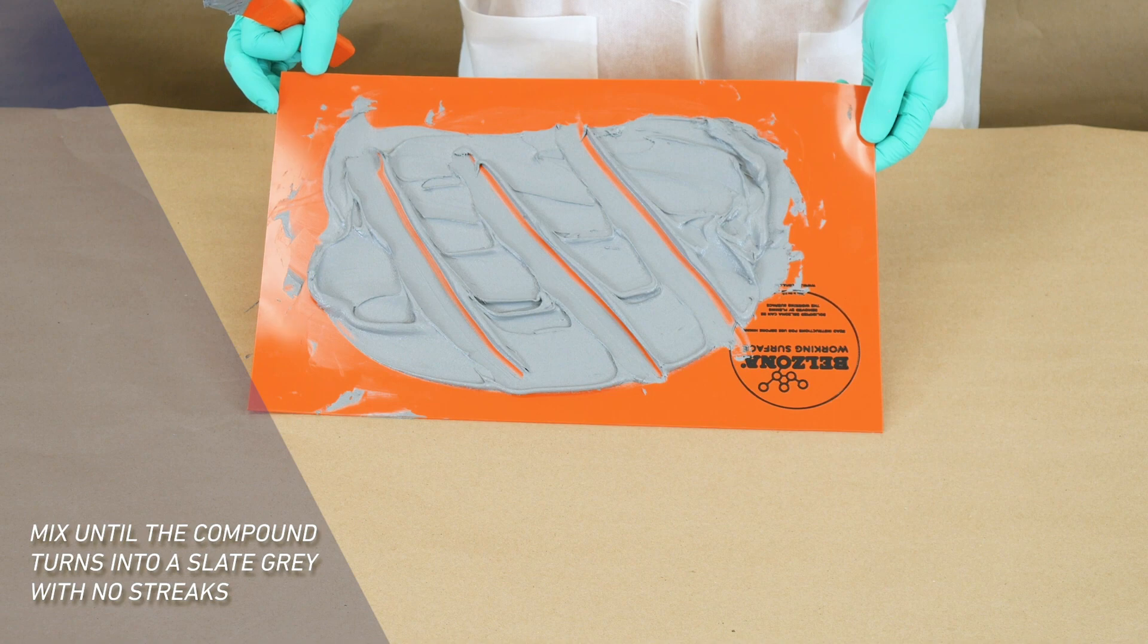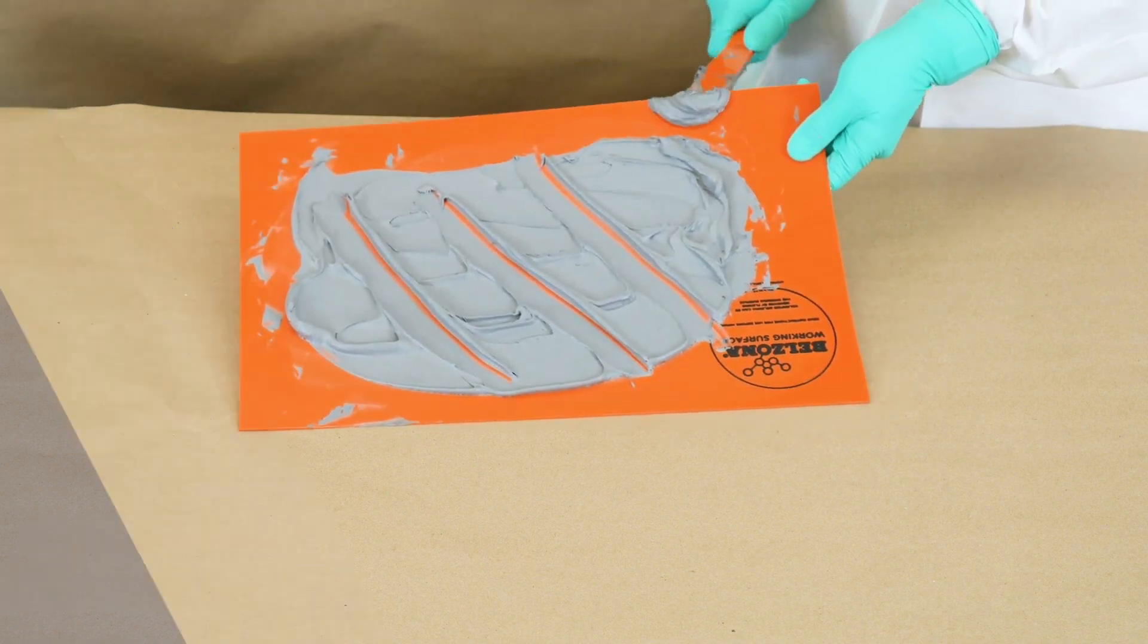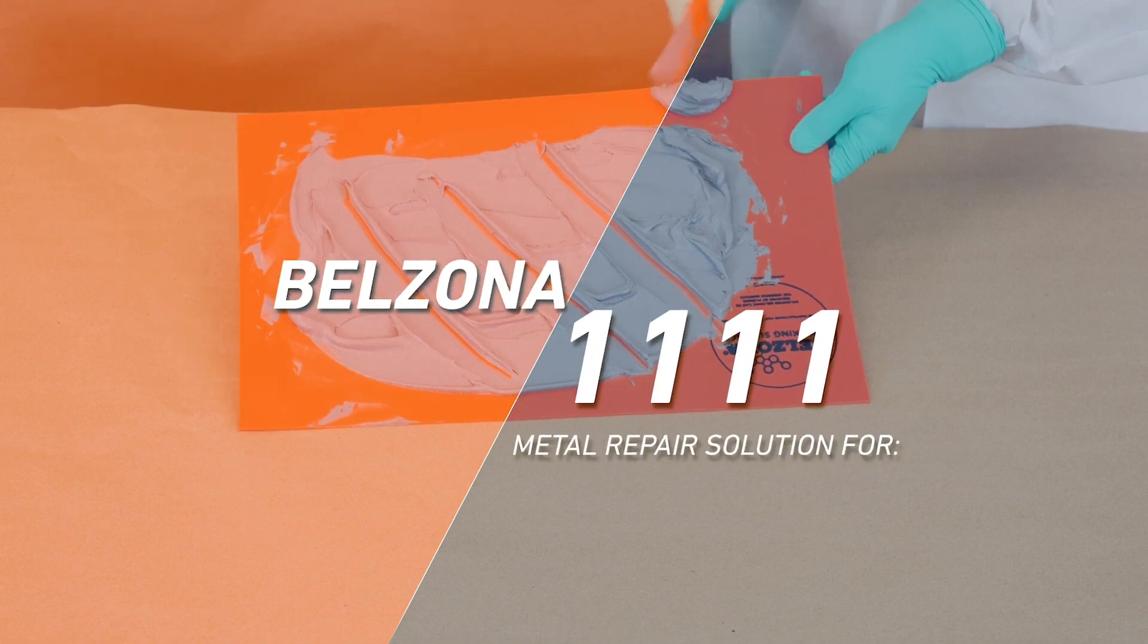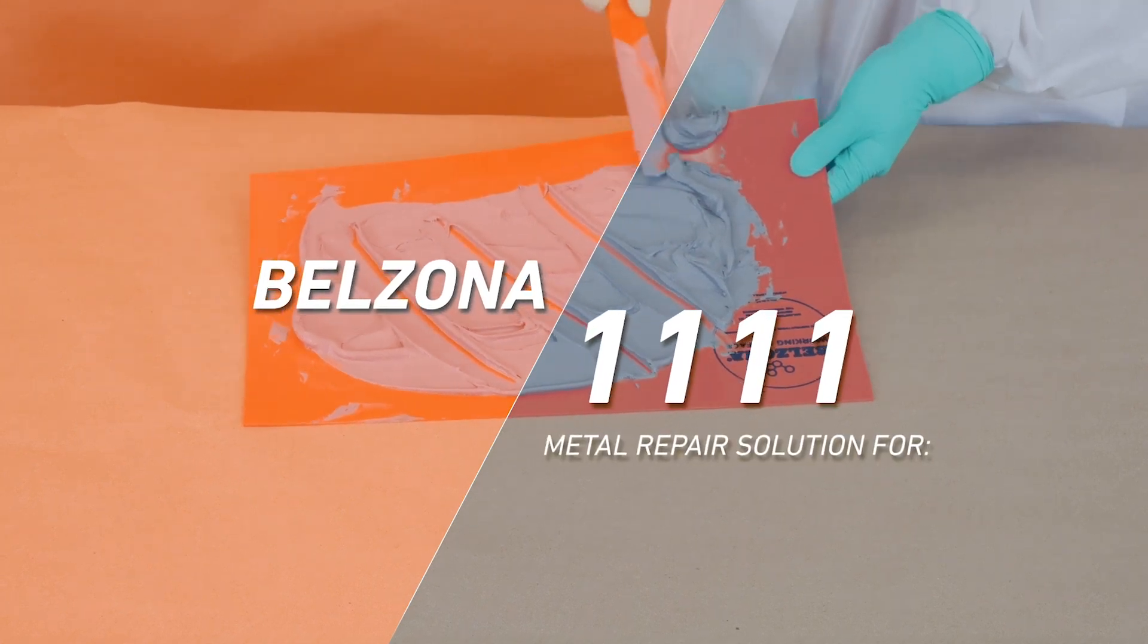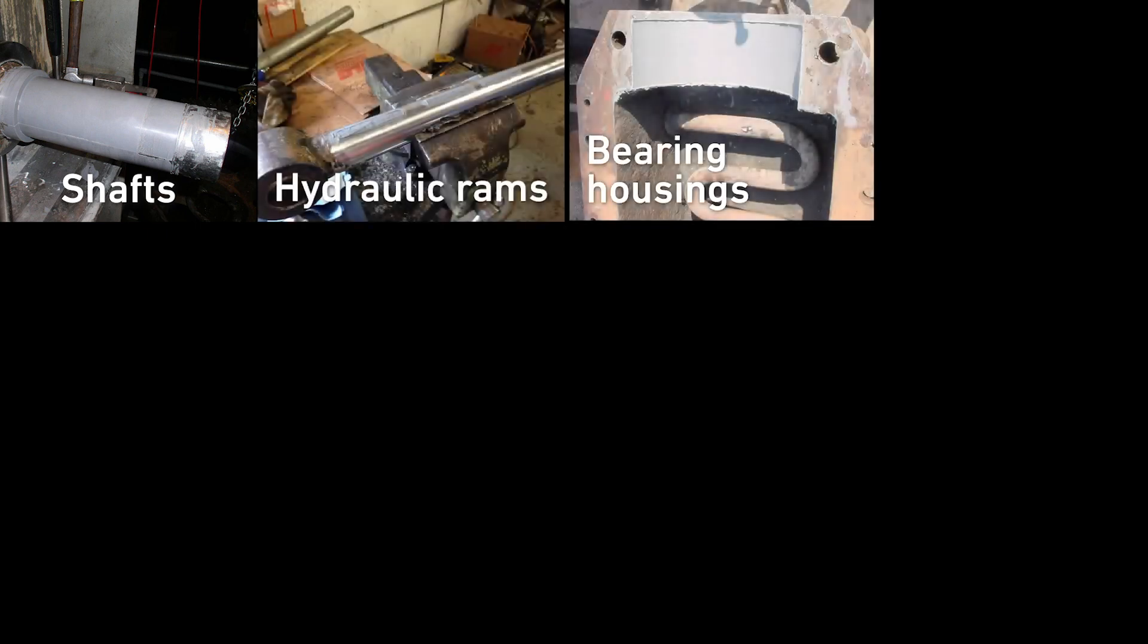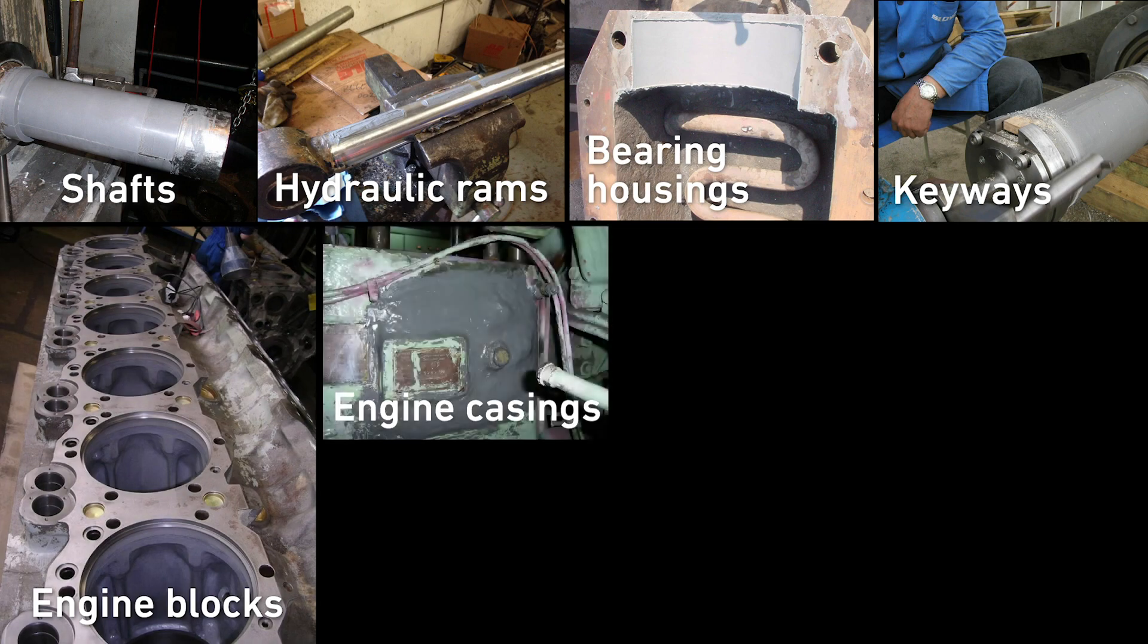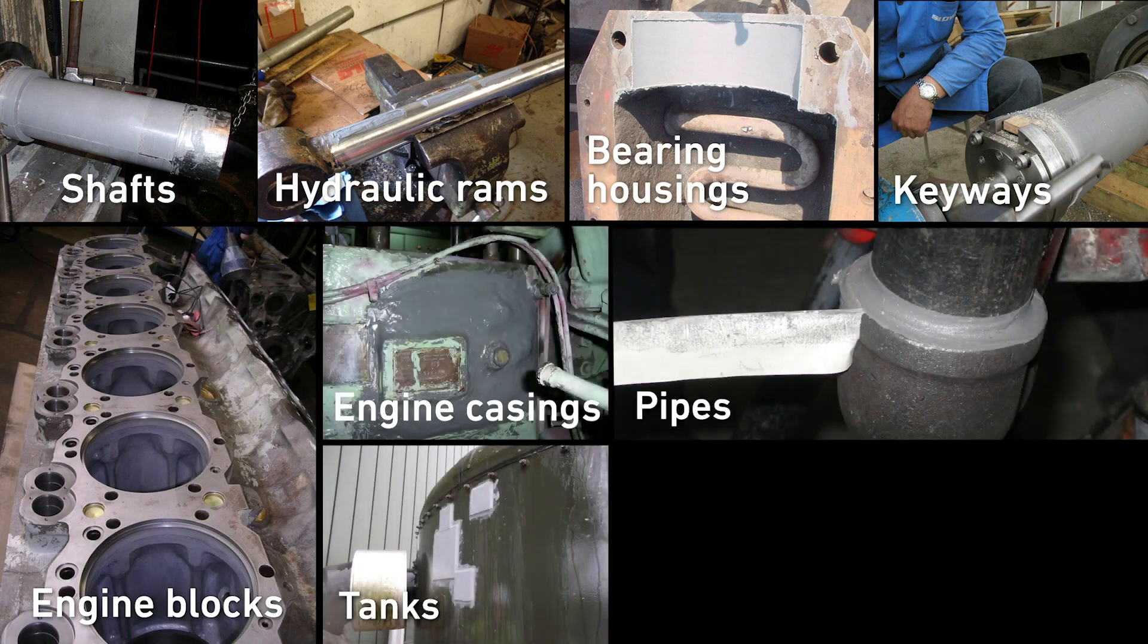Once the mixed material turns into a slate gray color with no streaks, it is ready for the planned application on shafts, hydraulic rams, bearing housings, keyways, engine blocks, engine casings, pipes, tanks, and flanges.